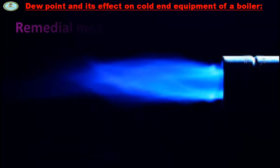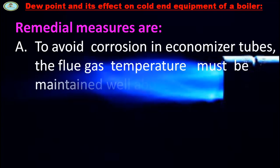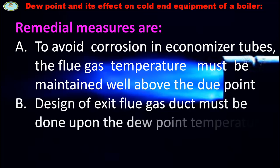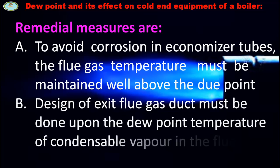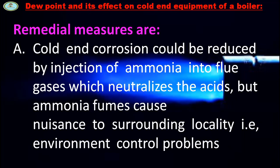Remedial measures are as follows: To avoid corrosion in economizer tubes, the flue gas temperature must be maintained well above the dew point temperature. Design of exit flue gas ducts must be done upon the dew point temperature of condensable vapor in the flue gases. Cold end corrosion could be reduced by injection of ammonia into flue gases, which neutralizes the acids, but ammonia fumes cause nuisance to surrounding locality, ideally an environment control problem.